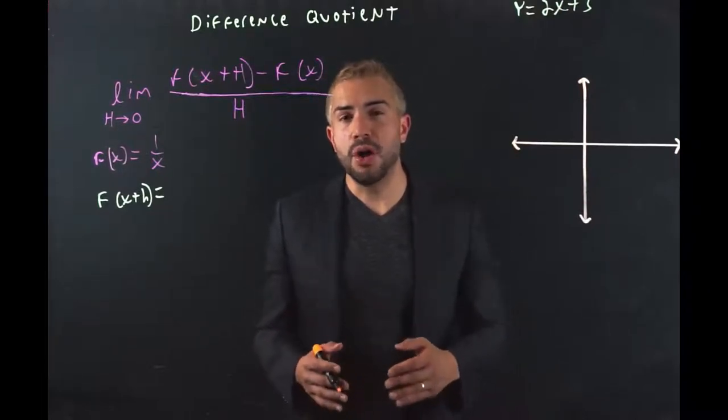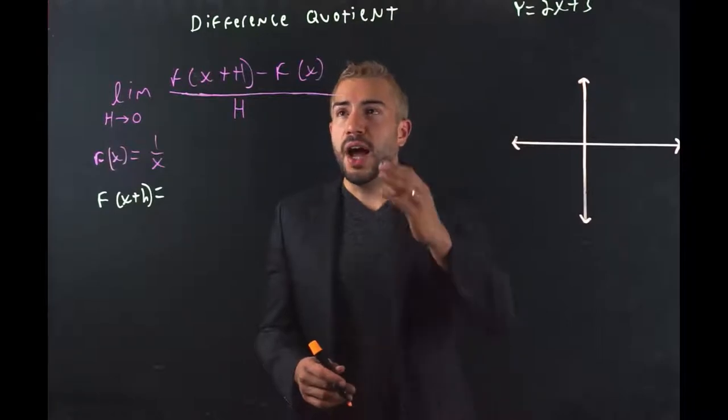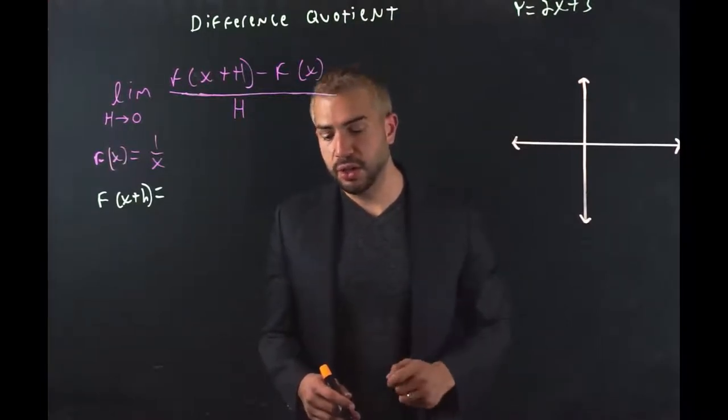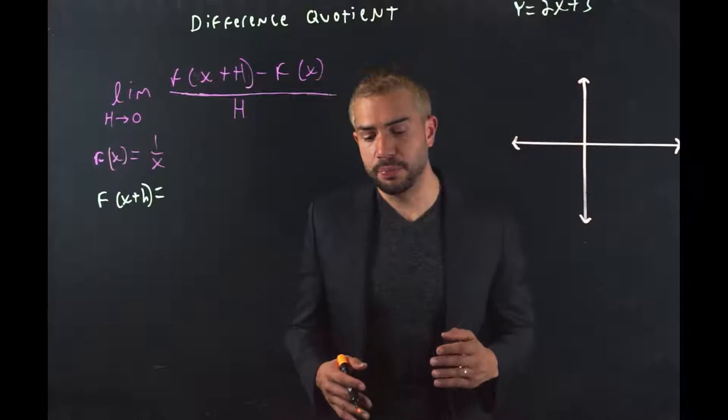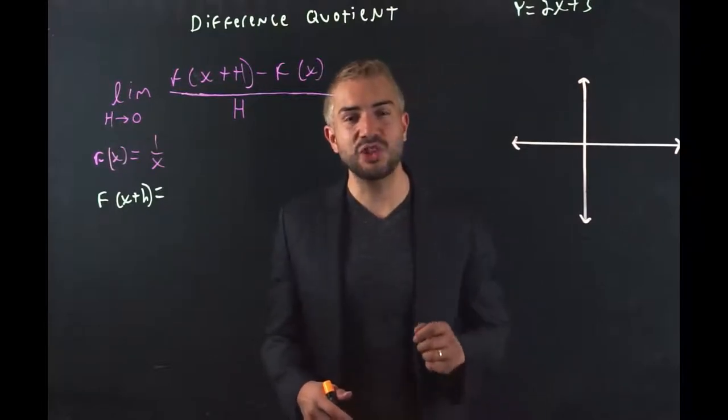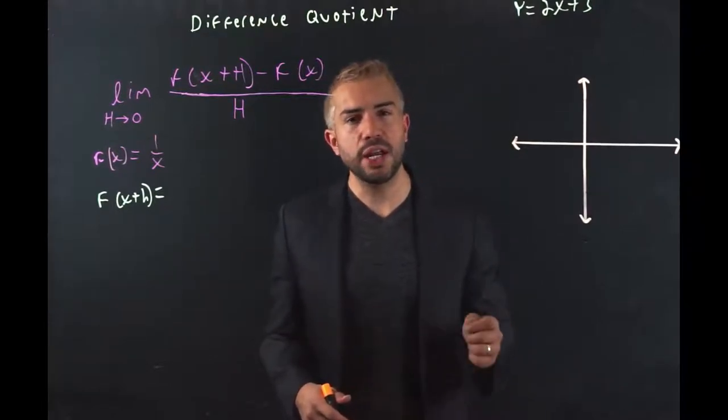He also helped develop modern-day calculus, where we find the difference quotient, that is used extensively for the definition of the derivative. It's also used to find the instantaneous rate of change. Rate of change is really slope.